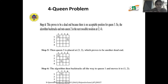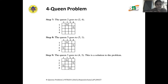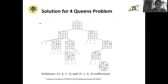We move the first queen to the second slot. The second queen is then placed in the fourth position, the third queen is placed in the first position, and now the fourth queen can be placed in the third position. This is how the 4-Queens problem is solved using the backtracking technique.